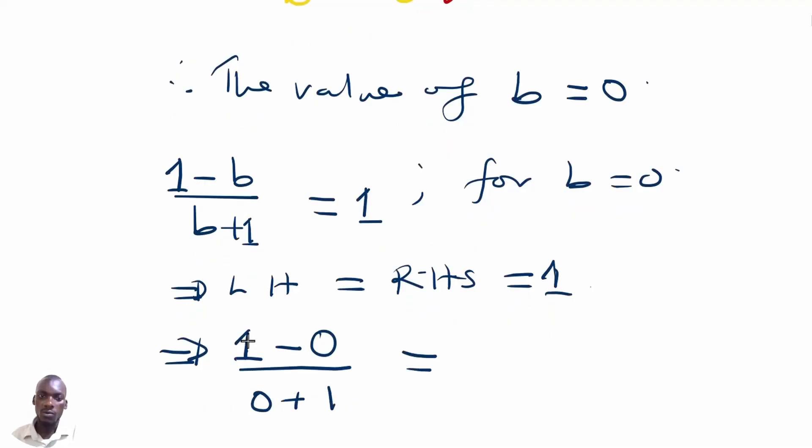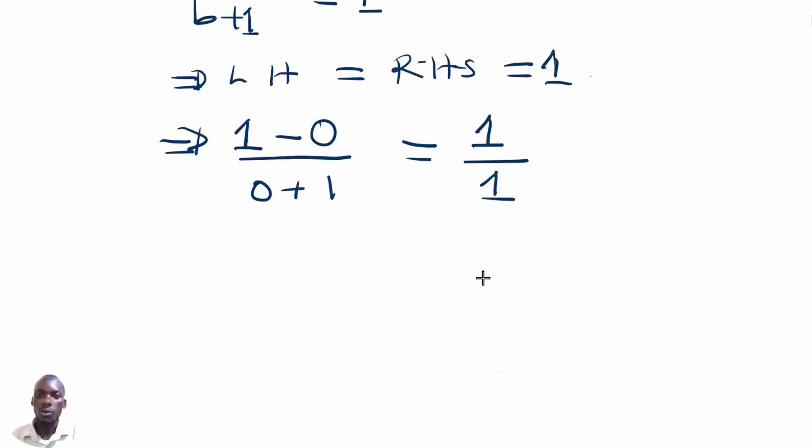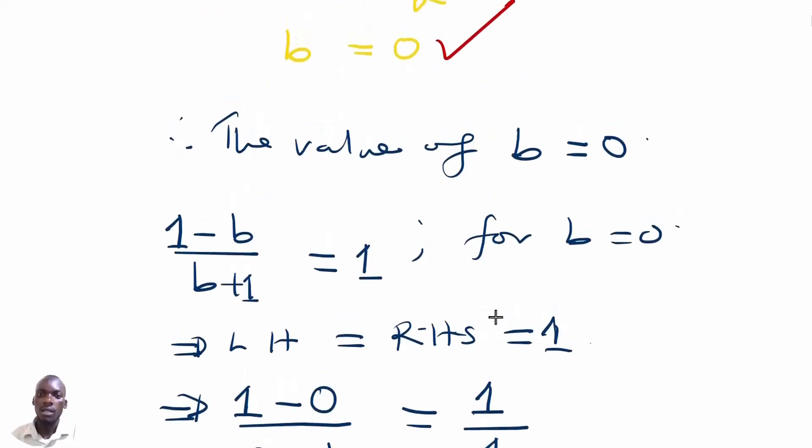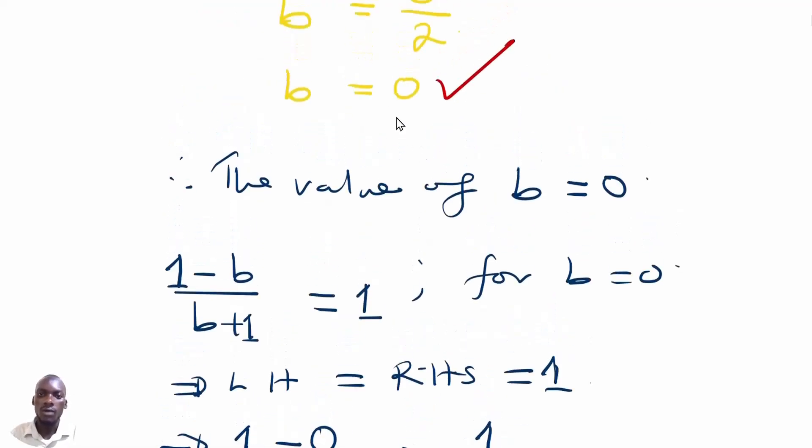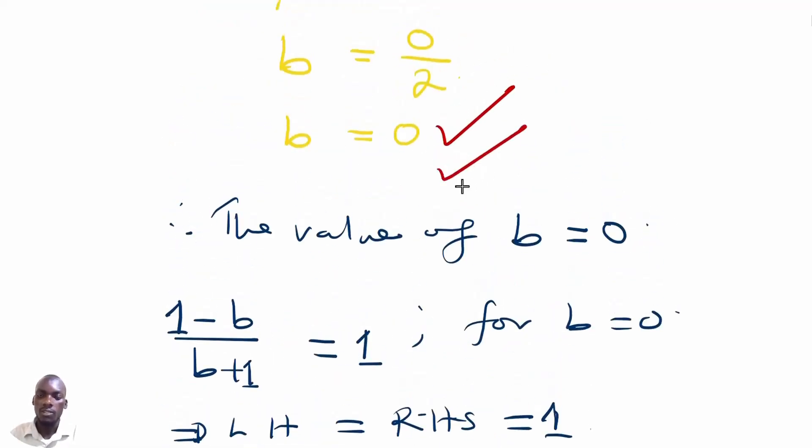As we simplify, we are going to have 1 take away 0, which is 1, then divide by 0 plus 1 to give us 1. So 1 divided by 1 gives us 1, which is the same as the 1 on the right hand side. Therefore, the value of b being 0 is very correct.